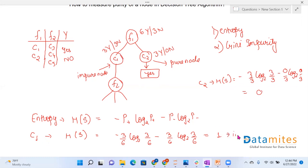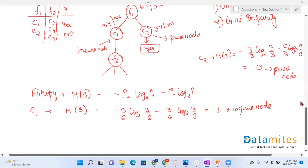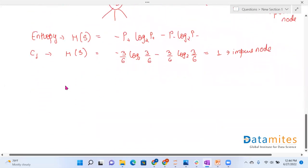We can see that entropy for category C1 node is 1. So it is known as impure node. And if the entropy is 0, that is a pure node.